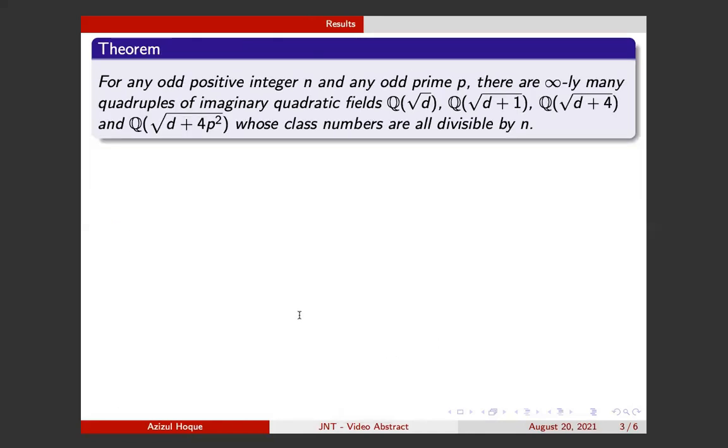In this paper, we mainly prove this theorem: For any odd positive integer n and any odd prime p, there are infinitely many quadruples of imaginary quadratic fields of this form whose class numbers are all divisible by n.